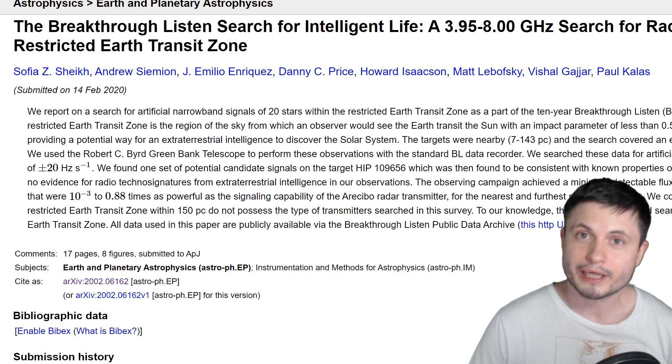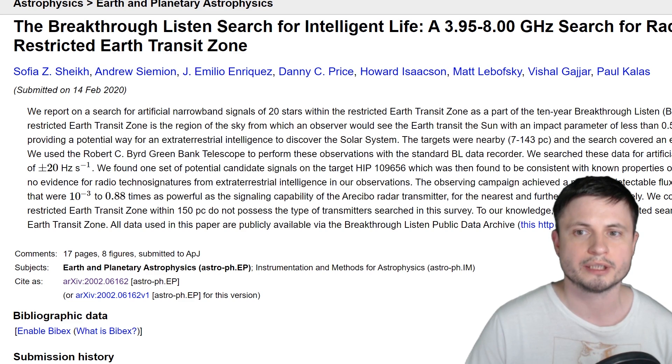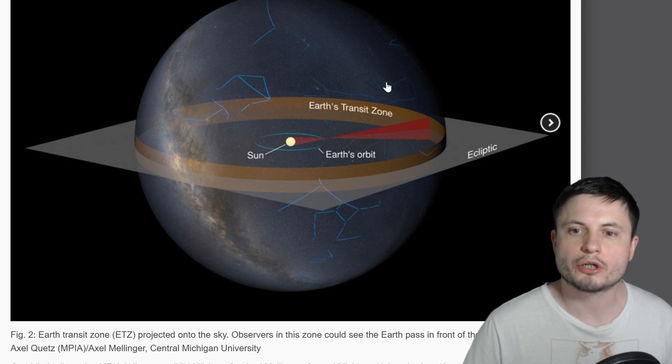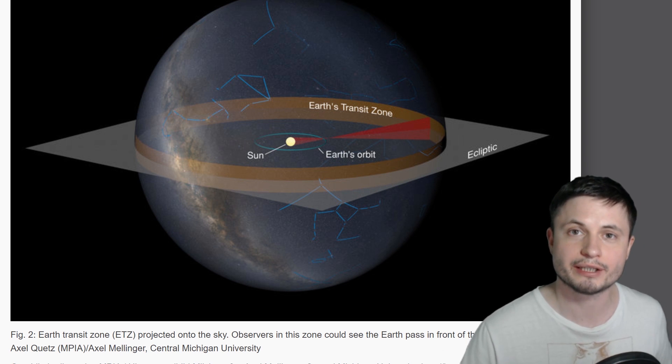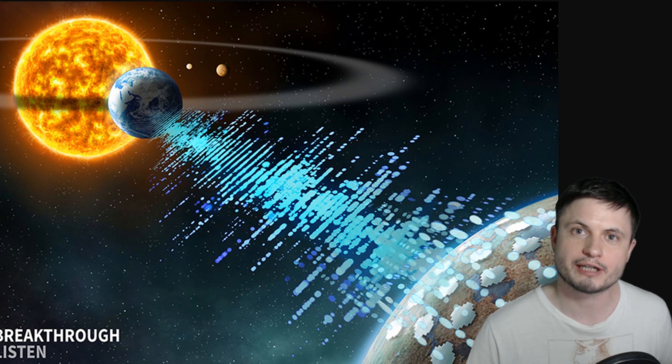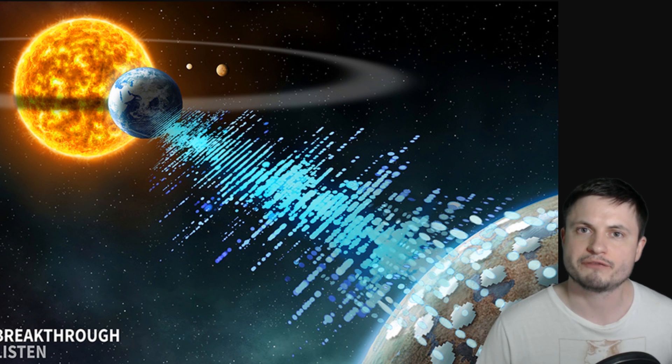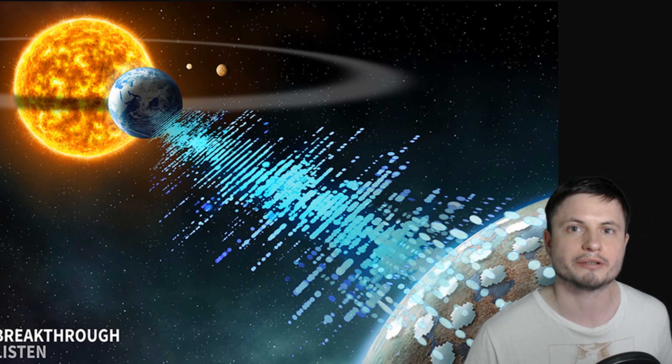And interestingly, well, right now we haven't really found anything. This particular study you can find in the description below as well analyzed the stars located in the so-called Earth transit zone. Essentially, these are the stars that would be able to see Earth transiting in front of the Sun, which would allow aliens to see our planet Earth in the same way that we see other exoplanets and discover them using telescopes like Kepler. And by analyzing frequencies between about 3 to about 8 GHz, they've unfortunately identified only one potential candidate for some sort of a communication that could have been from aliens.